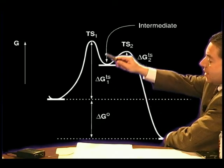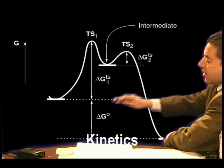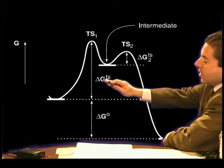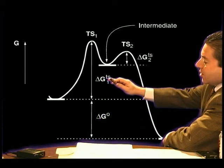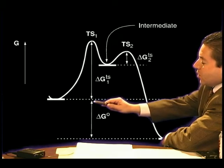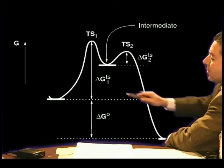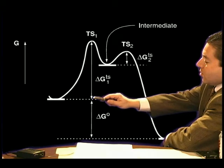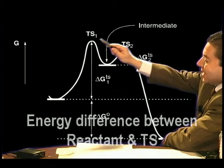On the other hand, we have the kinetics of a reaction. The kinetics is not the delta G naught, but the delta G transition state. And we're talking about not the energy transitions between the reactant and the product, but the energy transitions between the reactant and the transition states.